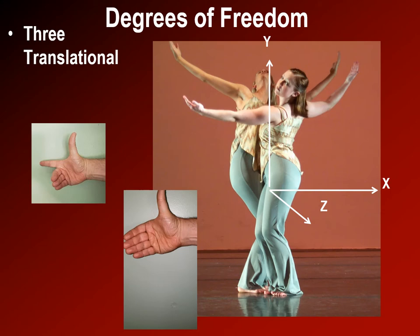Using your right hand, with three fingers pointing upward in the y direction, your index finger points to the right in the positive x direction, and your thumb comes out in the positive z direction. Rotation around those axes in the positive direction can also be understood from your thumb.